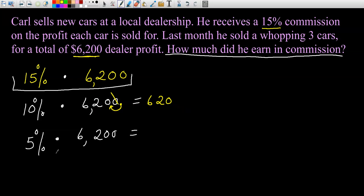Now we should be able to take 5% of $6,200. Think about it, 5% is half of 10%. So I'll take half of this number or divide it by 2. So half of 620 is 310. In other words, 5% of 6,200 is 310. And I just add these two up. So 620 plus 310 is 930.